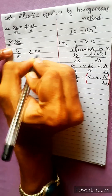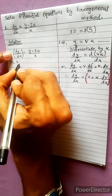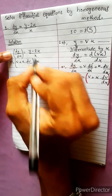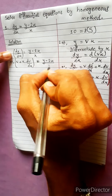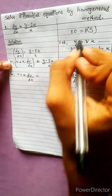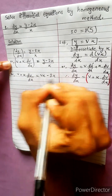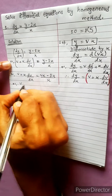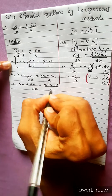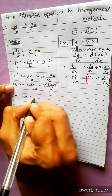dy by dx equals to (y minus 2x) divided by x. Substituting y = vx: v plus x into dv by dx equals (vx minus 2x) divided by x. Taking x common: v plus x dv by dx equals (x(v minus 2)) divided by x, so x cancels and v plus x dv by dx equals v minus 2.